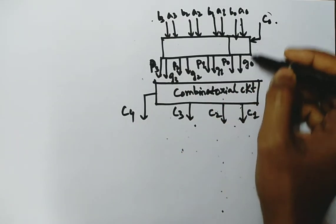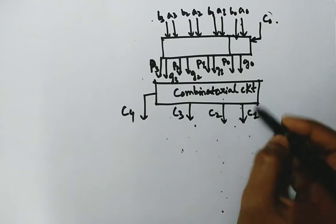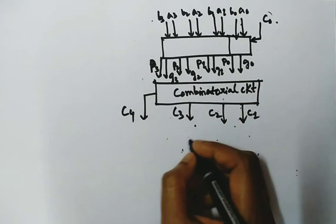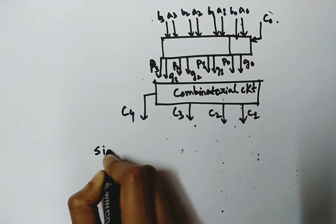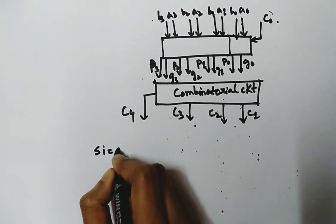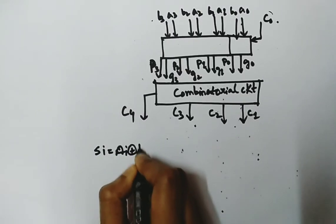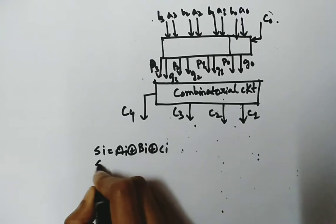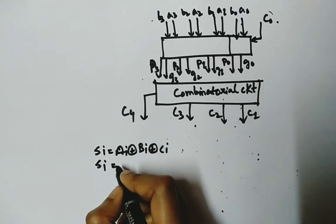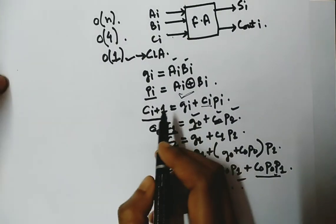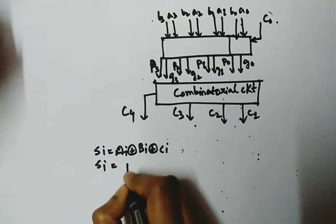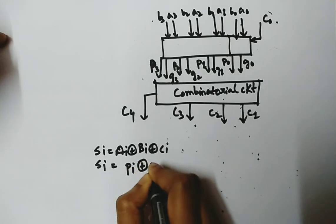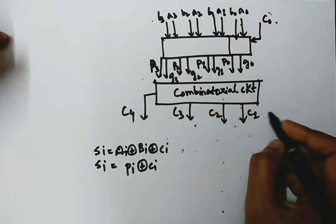So all the carries are generated parallely by a two-stage circuit. Then if we see the sum expression, sum equal to Ai XOR Bi XOR Ci. So sum is basically Ai XOR Bi is Pi here, so this we will replace by Pi XOR Ci.